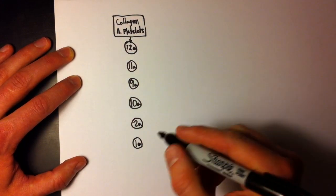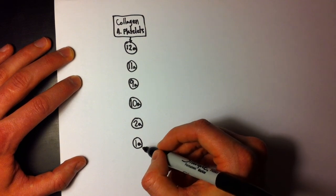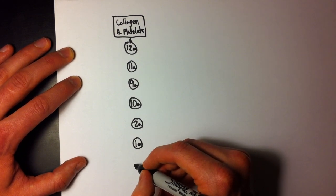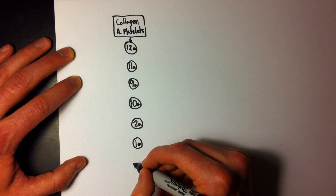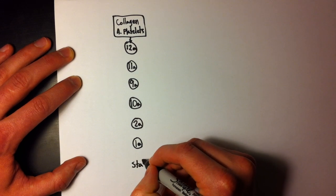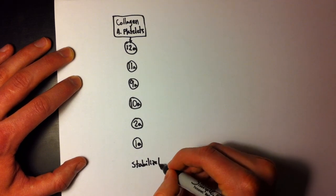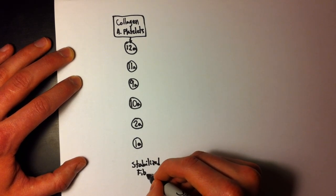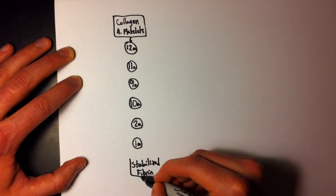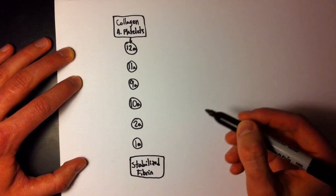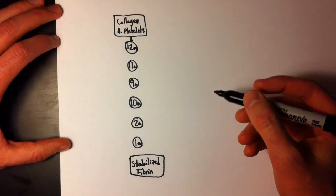Fibrin is 1A. And finally, 1A eventually will turn into the stabilized fibrin. Okay. And I know you know that that's way too simplified, so let's add in some of the details.